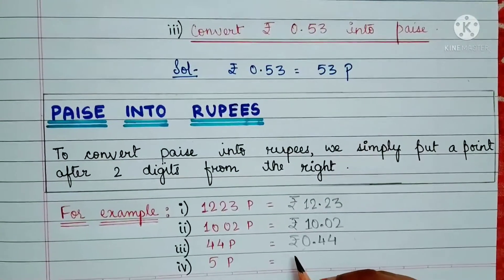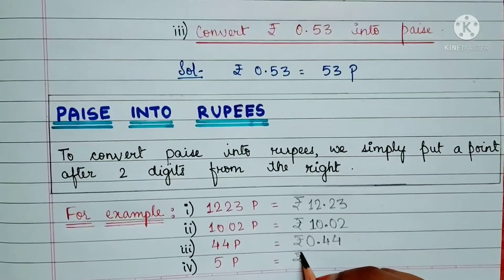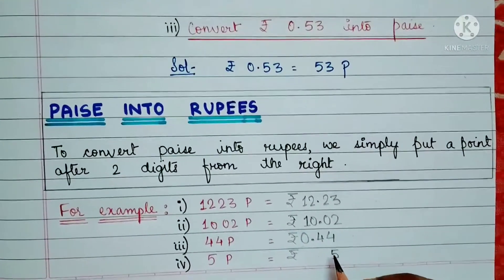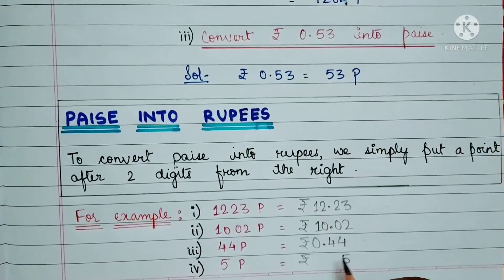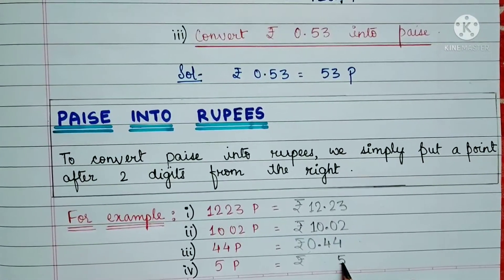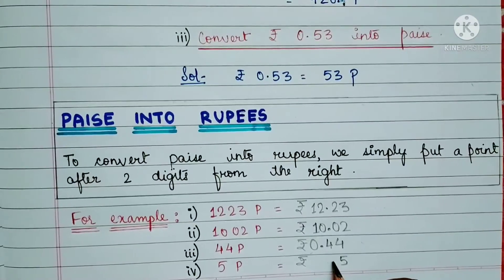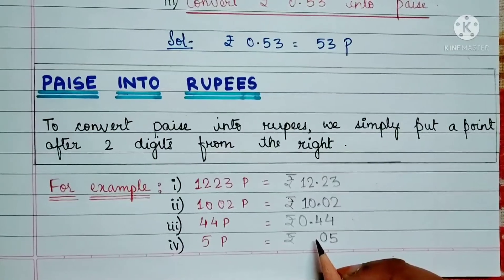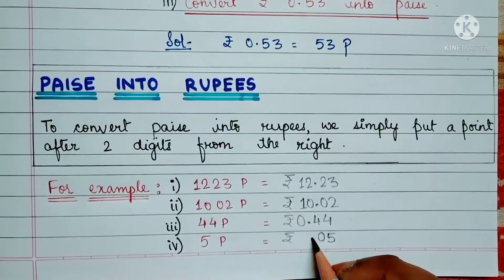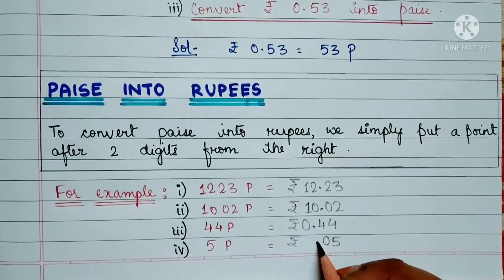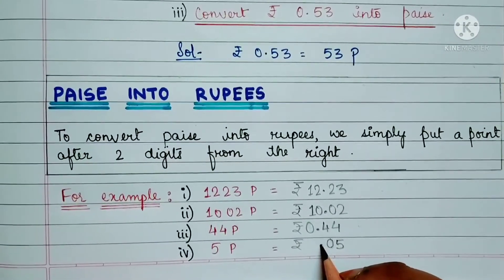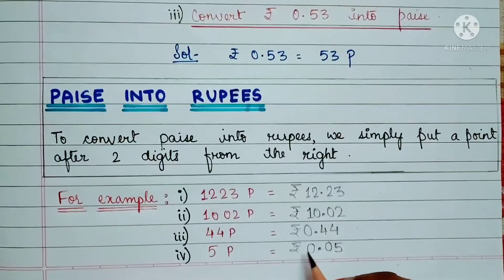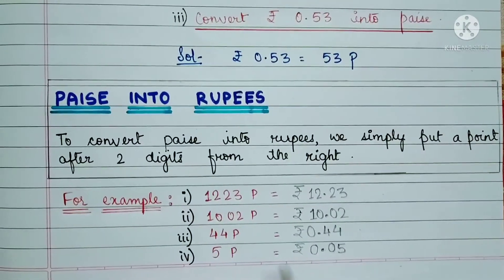For converting 5 paise into rupees, we write the number and put a dot just after 2 digits from the right. From the right, this is the first digit. Here we have no more digits, so we write a 0, and then put a point just after this 0. Since we have nothing in rupees, we write a 0. So rupees 0.05 represents 5 paise.